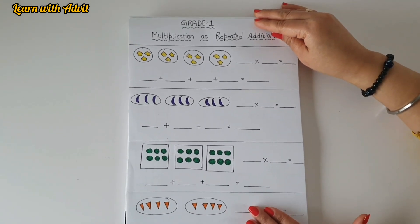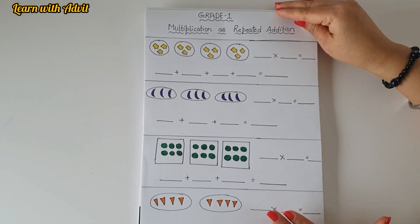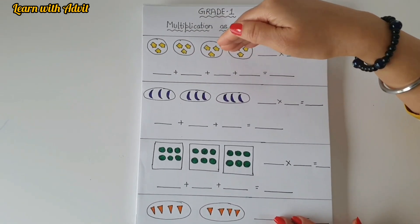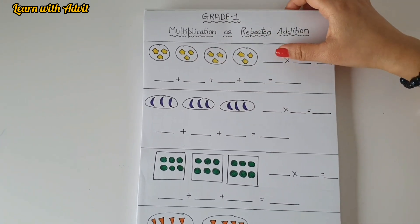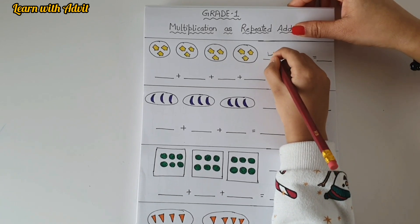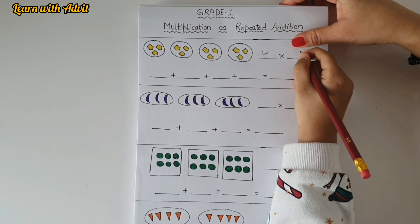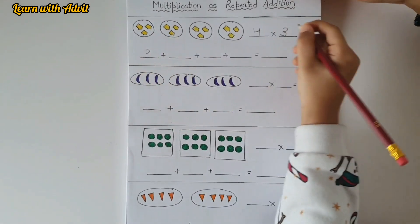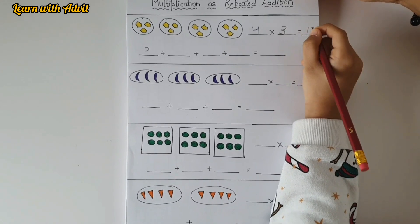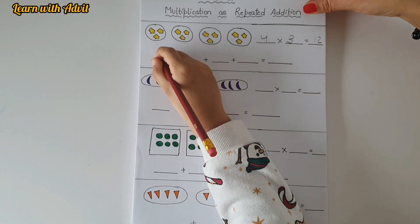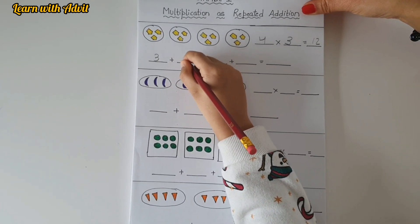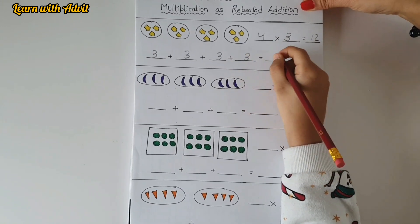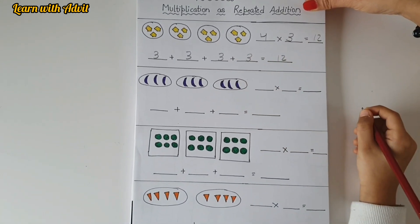This is the second way of multiplication. We can do multiplication as repeated addition. Here are also groups and objects but shown in a different way. How many groups are there? There are four groups with three objects each. Four times three — now complete it first. Write in repeated addition form: three plus three plus three plus three equals twelve.